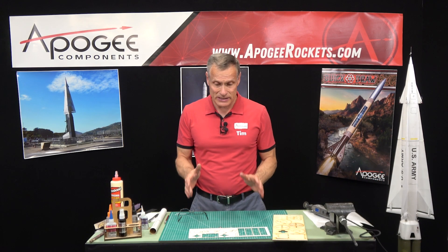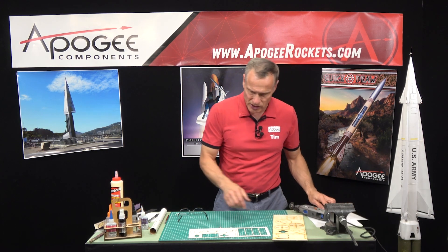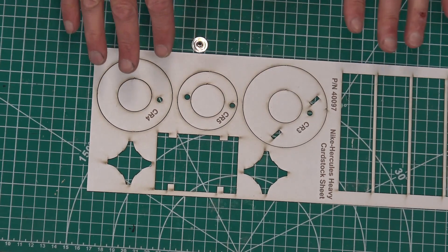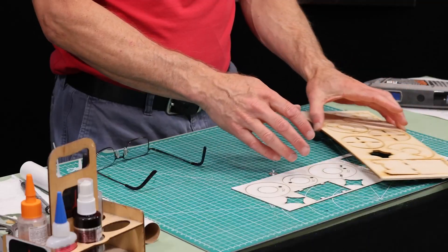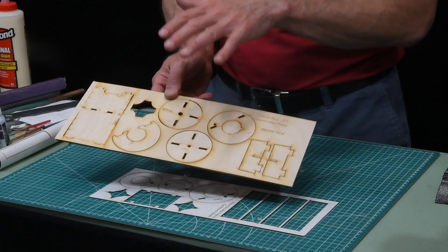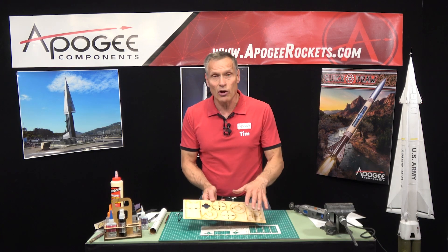Okay, we're on step 86 and this step calls for us to remove CR5, which is this ring from the cardboard ring set. You might as well go ahead and remove the other ones as well and everything off of this plywood sheet because in steps 86 through 105 we're going to use all these parts.